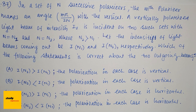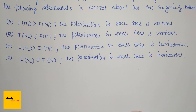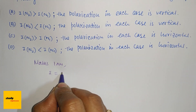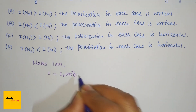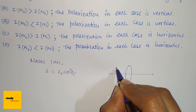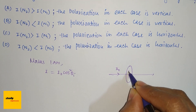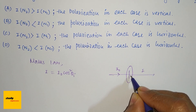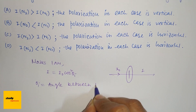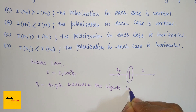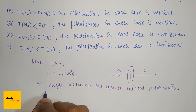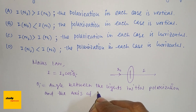First of all, we have to know Malus's law. Malus's law is I = I₀ cos²θ. If there is a polarizer with its axis, and the initial intensity is I₀, then the transmitted intensity is I, where θ is the angle between the light's initial polarization and the axis of the polarizer.